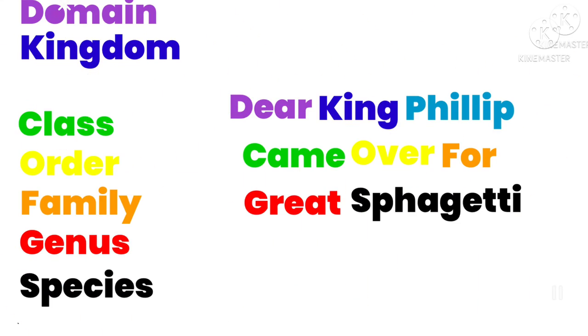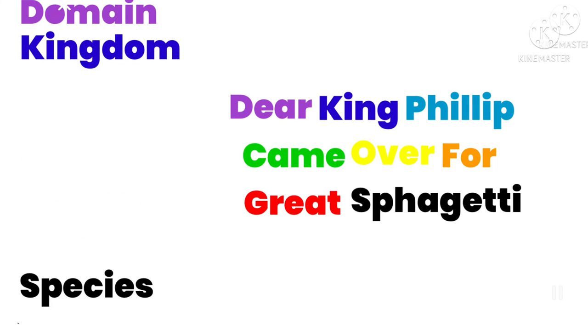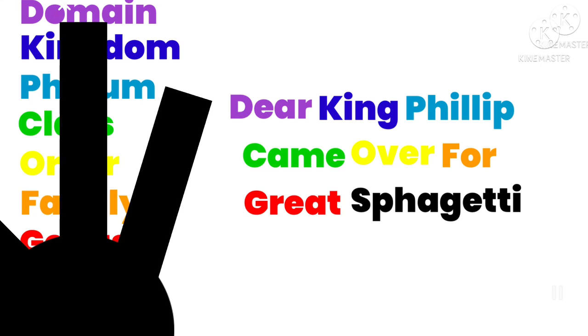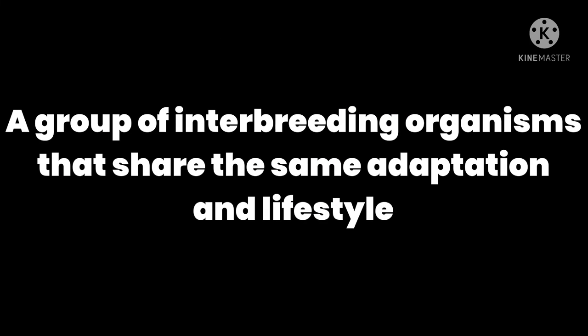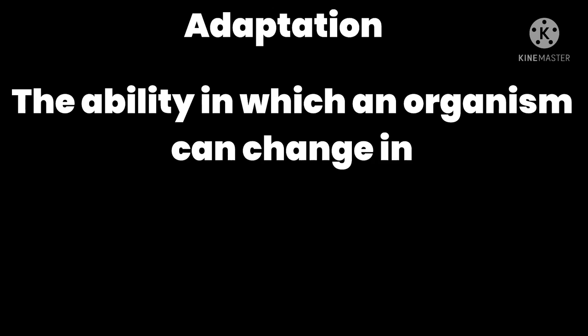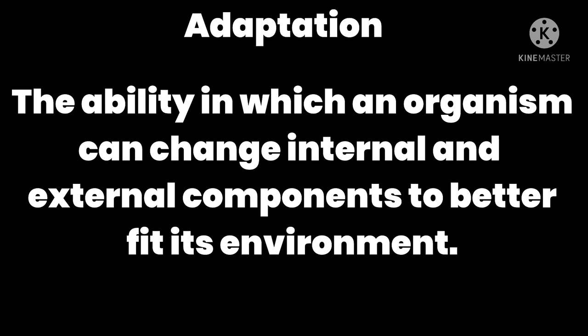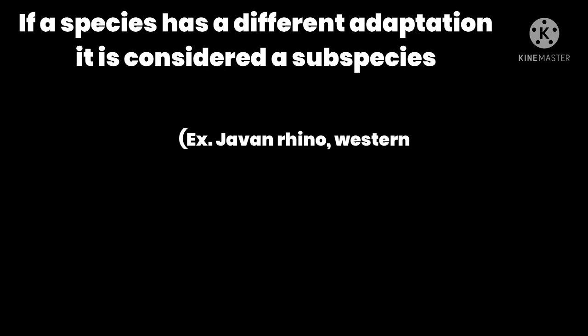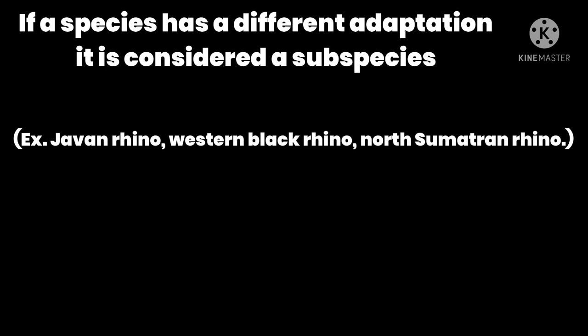I'm going to skip over phylum, class, order, family, and genus, because if I go over those there will be way too much material to cram into one video. So I'll just skip over to species. Species is a group of interbreeding organisms that have the same adaptation and lifestyle. There are two things that hold a species together: interbreeding and adaptation. Interbreeding is when a group breeds with a member of the same species. Adaptation is the ability of an organism to change internal and external components to better fit its environment. If a species has a different adaptation, it is considered a different part of the species — so there are species, subspecies, and sub-subspecies.